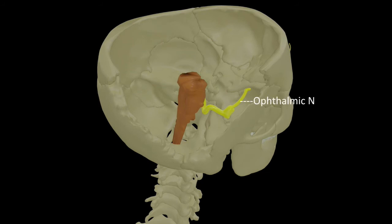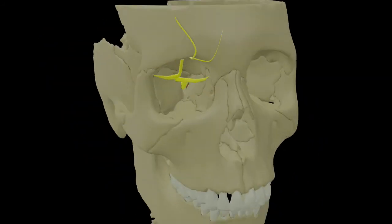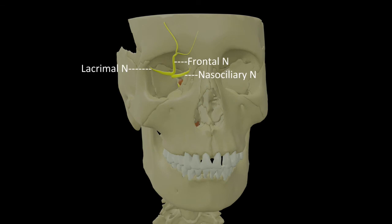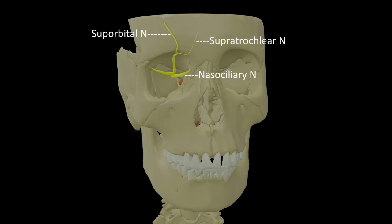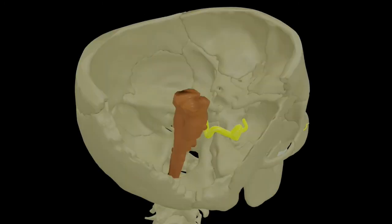Now we will trace the first division of the trigeminal nerve - the ophthalmic nerve. It runs forwards along the lateral wall of the cavernous sinus and enters the superior orbital fissure, where it divides into its three branches: lacrimal, frontal, and nasociliary. The lacrimal runs along the lateral wall of the orbit and supplies the lacrimal gland. The frontal runs along the roof of the orbit and at the supraorbital notch divides into supraorbital and supratrochlear nerves. The nasociliary runs along the medial wall of the orbit and gives out five branches: anterior ethmoidal, posterior ethmoidal, long ciliary, branch to the ciliary ganglion, and infratrochlear.